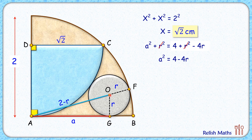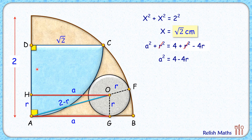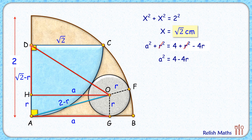Now from point O, let's draw a line parallel to AG. This length OH will be a centimeters, and since OG is r, HA will also be r. The full length DA is √2 — the radius of the blue quadrant — so DH = √2 − r. Now let's join D to O. Since D and O are the centers of the circles and this is the point of contact, by theorem they lie in a straight line, and DO = √2 + r.